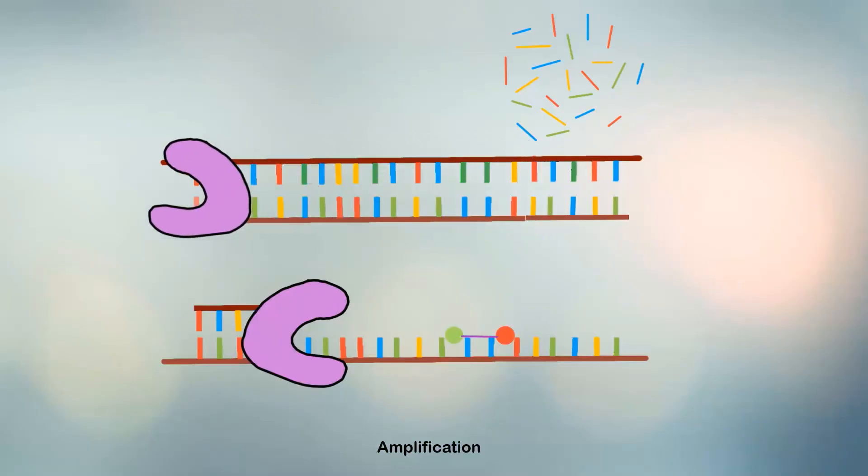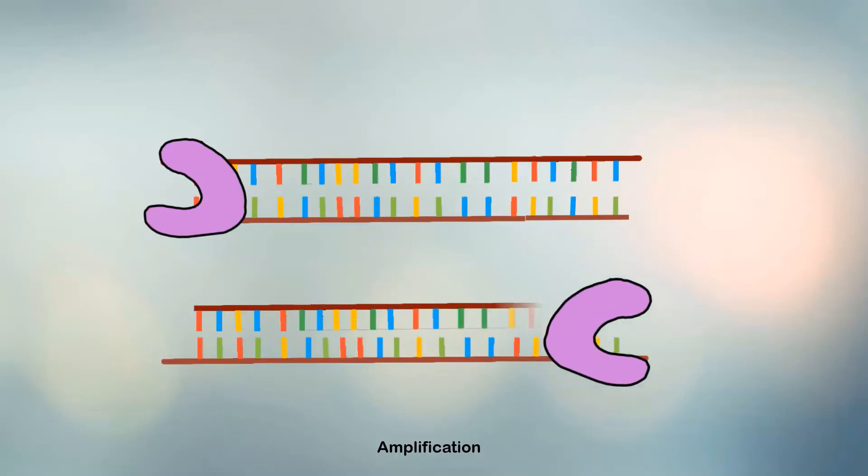DNA polymerase then degrades the bound probe which results in an increased fluorescence signal.